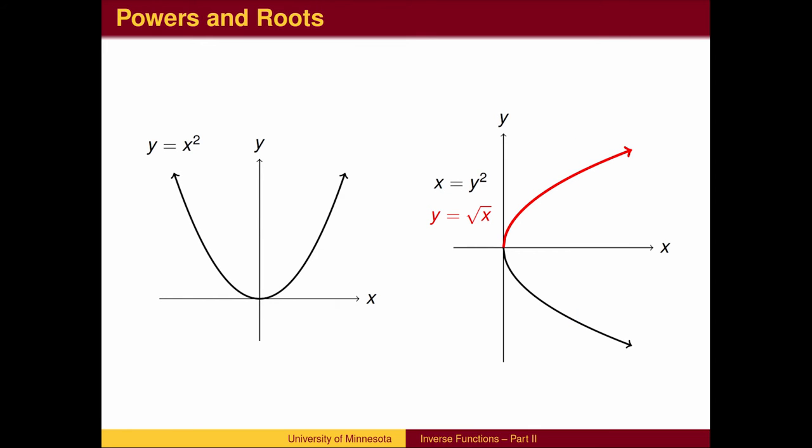When defining the function y equals the square root of x to be the inverse of squaring, we need to make a decision as to which branch of the graph to use. For the square root function, we choose the positive answer.